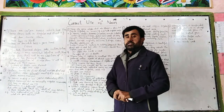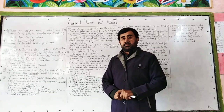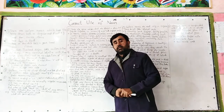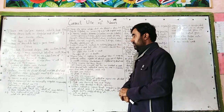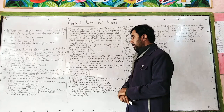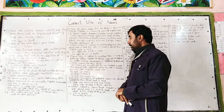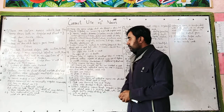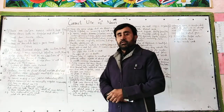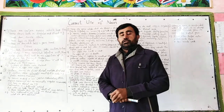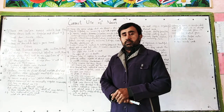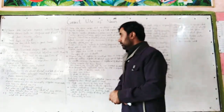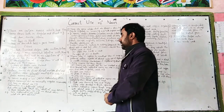The other rule: nouns ending in '-ICS' — for example, politics, mathematics, ethics, physics, economics — are normally singular. They are uncountable nouns and have no plural use. They always take a singular verb. For example: 'Mathematics is a difficult subject.'